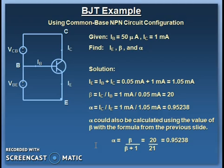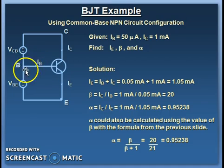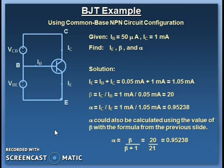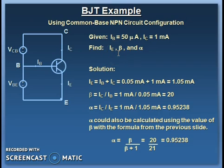Let us consider a simple example of common base configuration. The transistor is connected in common base — you can identify this because the base terminal is common between input and output. As per our definition, the total emitter current is the addition of base current and collector current. In this example, we are given the base current and collector current and are asked to find IE, beta, and alpha.